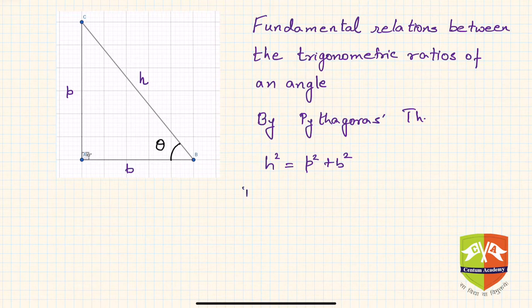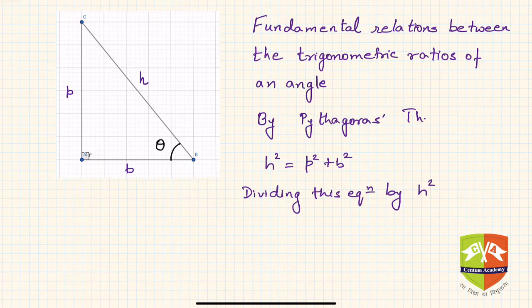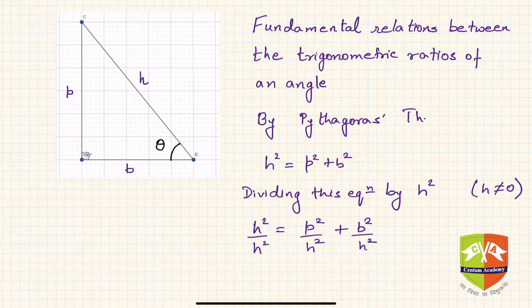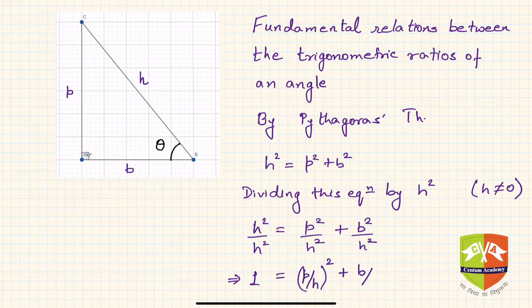So h² = p² + b². Now dividing this equation by h² on both sides — we can divide by h² because h is not equal to zero, since it is the hypotenuse of a right angle triangle with definite area. So h²/h² = p²/h² + b²/h², which gives us 1 = (p/h)² + (b/h)².